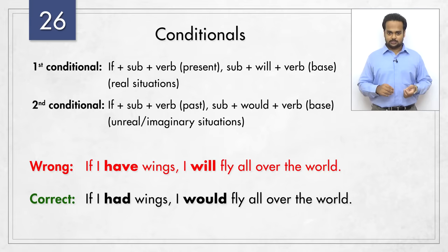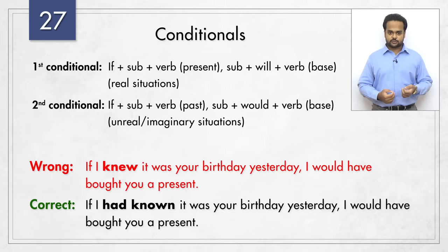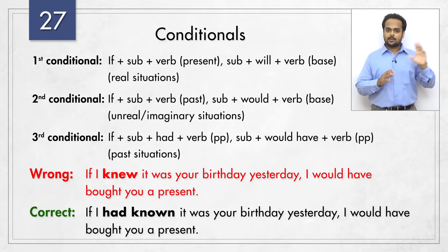Next one – 'if I knew it was your birthday yesterday, I would have bought you a present.' This is mostly correct, but there's a problem in the condition. We need to say 'if I had known it was your birthday yesterday, I would have bought you a present.' This is the correct structure for past conditionals – 'had' plus past participle verb in the condition and 'would have' in the result.